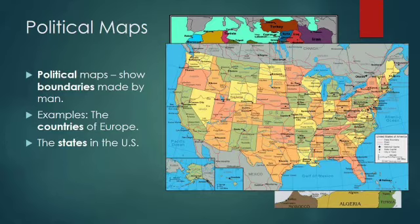Then there is the political map. What is a political map? It shows the borders of different countries and states — it shows us the borders of different countries and different states.